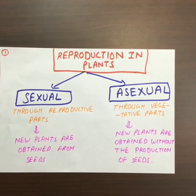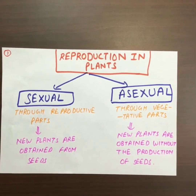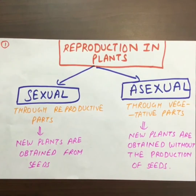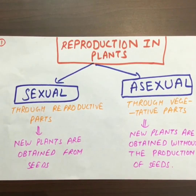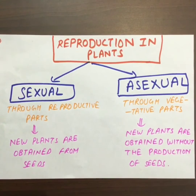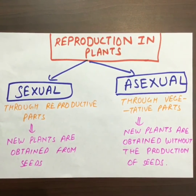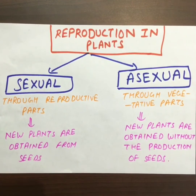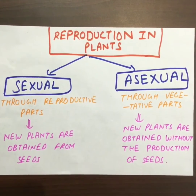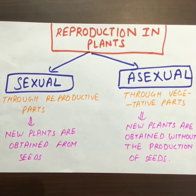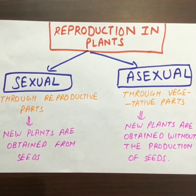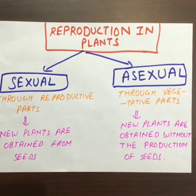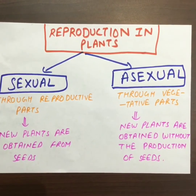Reproduction in plants. There are two types of reproduction in plants: sexual and asexual. Sexual reproduction is through the reproductive parts of the plant, while asexual reproduction is through the vegetative parts of a plant. In sexual reproduction, new plants are obtained from seeds, while in asexual reproduction new plants are obtained without the production of seeds or spores.